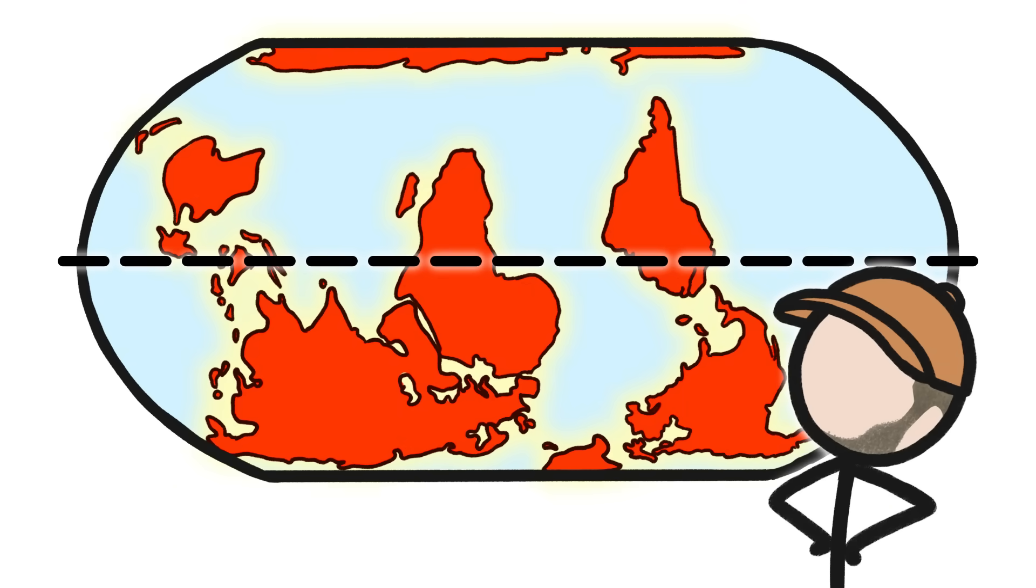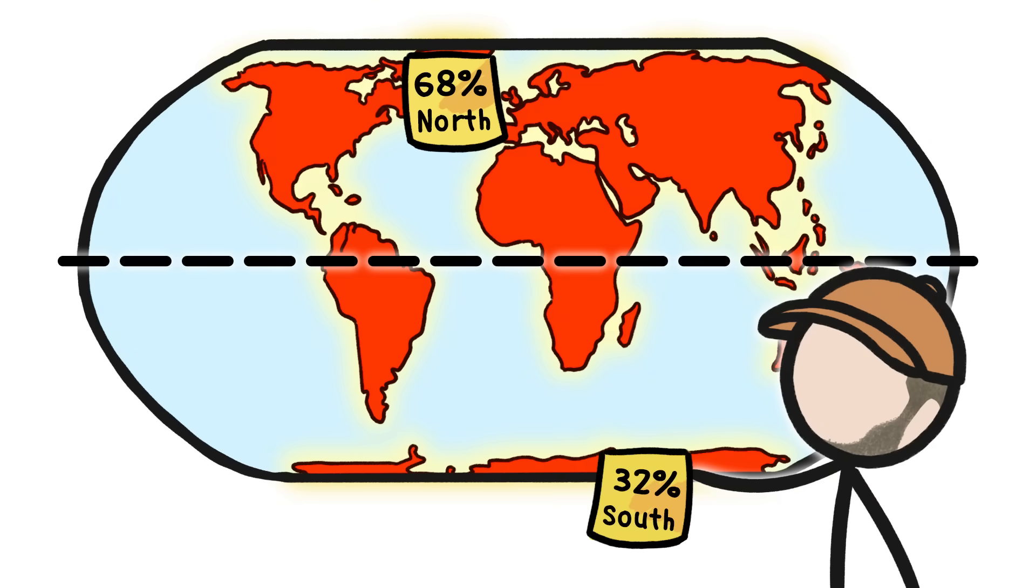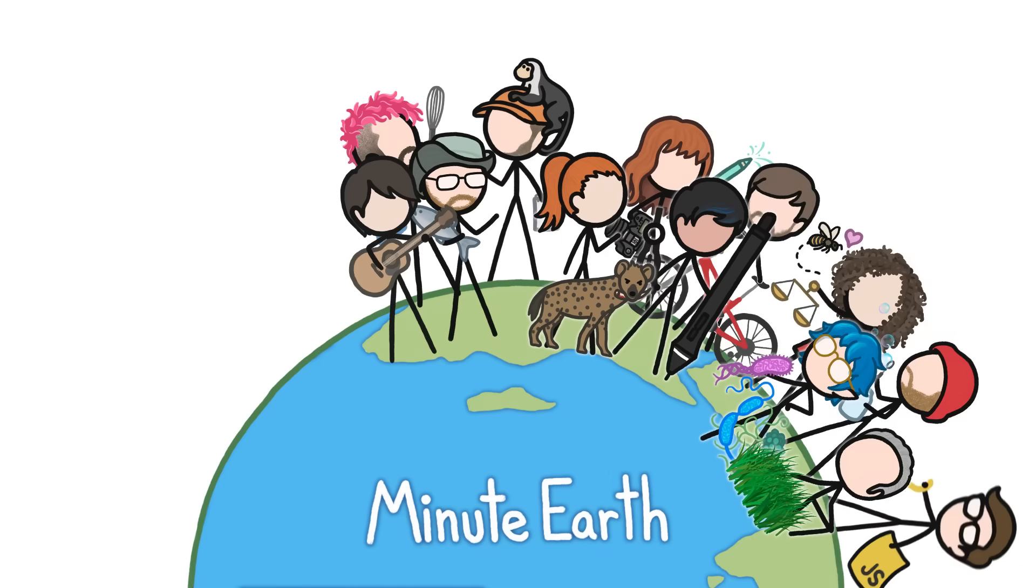More than two-thirds of it is in the no- Wait. No. Ah, that's better. More than two-thirds of the land on Earth is in the north. Welcome to Lopsided Earth.